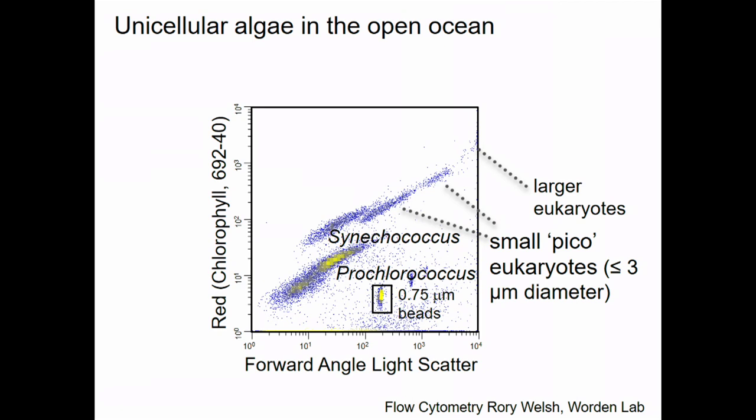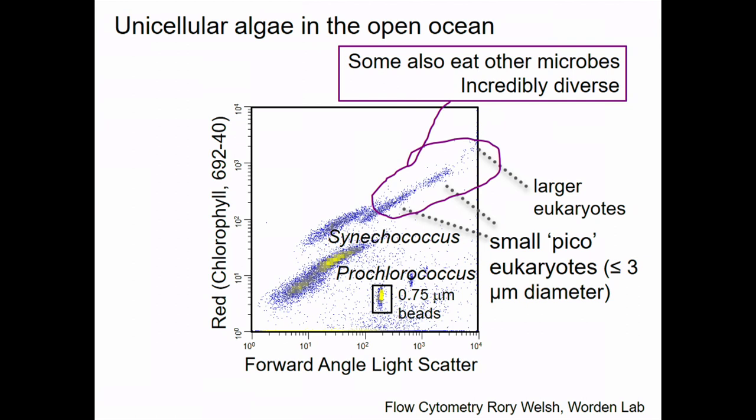Here's what data looks like from this instrument. On the x-axis is forward angle light scatter, a rough indicator of cell size, and on the y-axis is red fluorescence from chlorophyll. In this Gulf Stream water sample, you can see two Prochlorococcus populations coexisting with Synechococcus. Up here are larger cells — less abundant, but larger in cell size, so they can be quite important in terms of biomass.